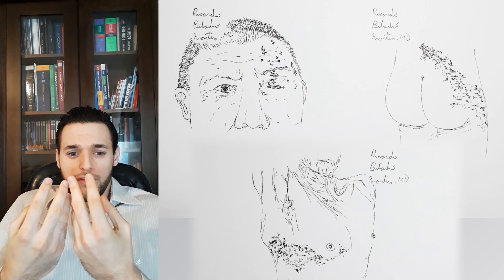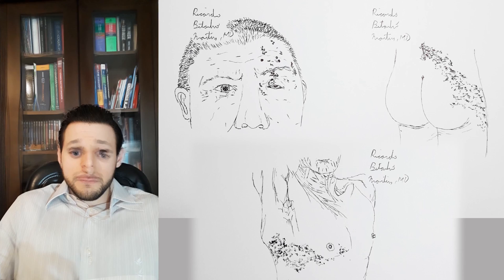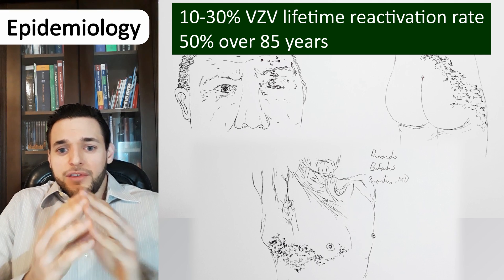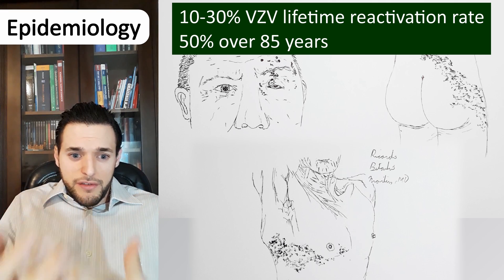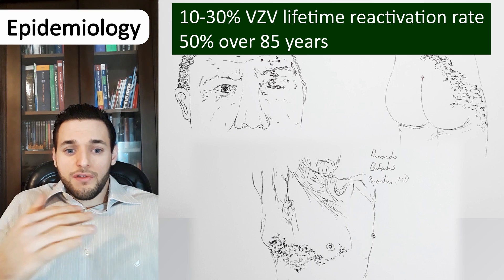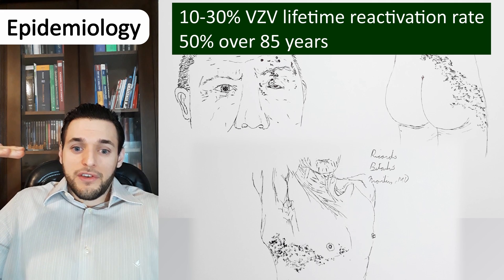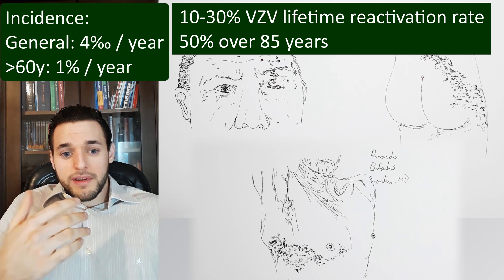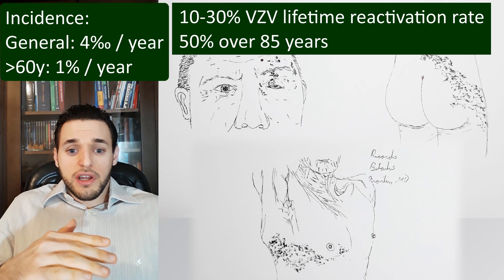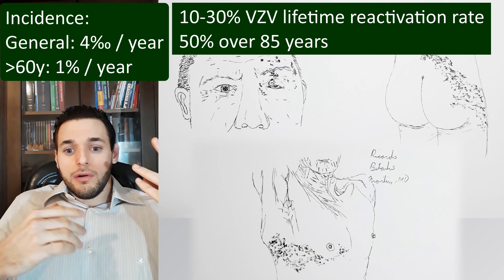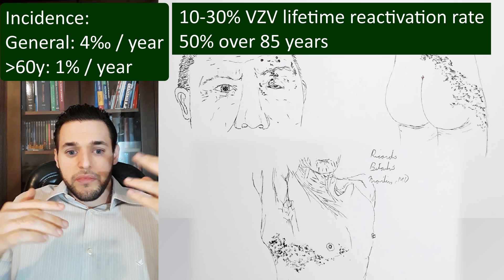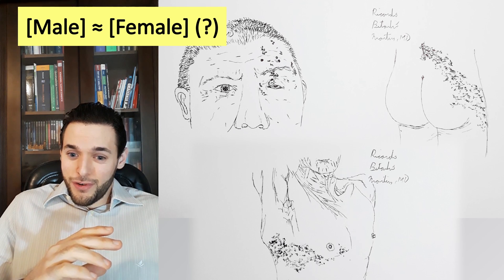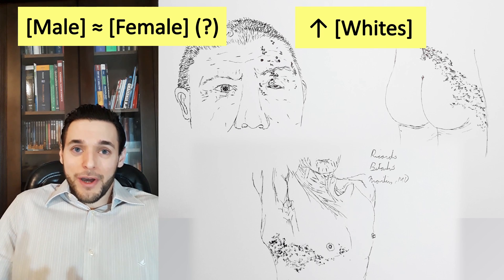There is also an immunoglobulin for patients at risk for severe zoster who have been recently exposed to the virus. It's estimated 10 to 30% of people infected by the varicella zoster virus will eventually develop shingles — a lifetime incidence rate that rises to 50% in those older than 85 years old. Overall, the incidence is 4 per thousand per year in the general population and 1% per year in those above 60 years of age. Herpes zoster does not appear to show sex predilection according to most sources, but it is significantly more common in Caucasian people.